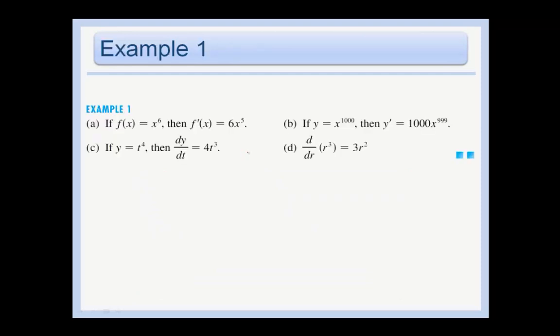So here are just some examples. If f(x) equals x to the 6th, then using the power rule, the derivative is just going to be 6 times x to the 6 minus 1, which is 5th.